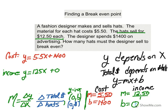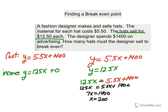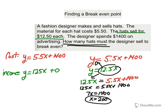Pause the video and use any method of solving systems of equations to find the break-even point. I decided to use substitution — I substituted 12.5X in for Y and got 12.5X equals 5.5X plus $1,400. Solving for X, I get X equals 200. Since X represents the number of hats, I have to sell 200 hats in order to break even. Please pause the video and copy this into your notes.